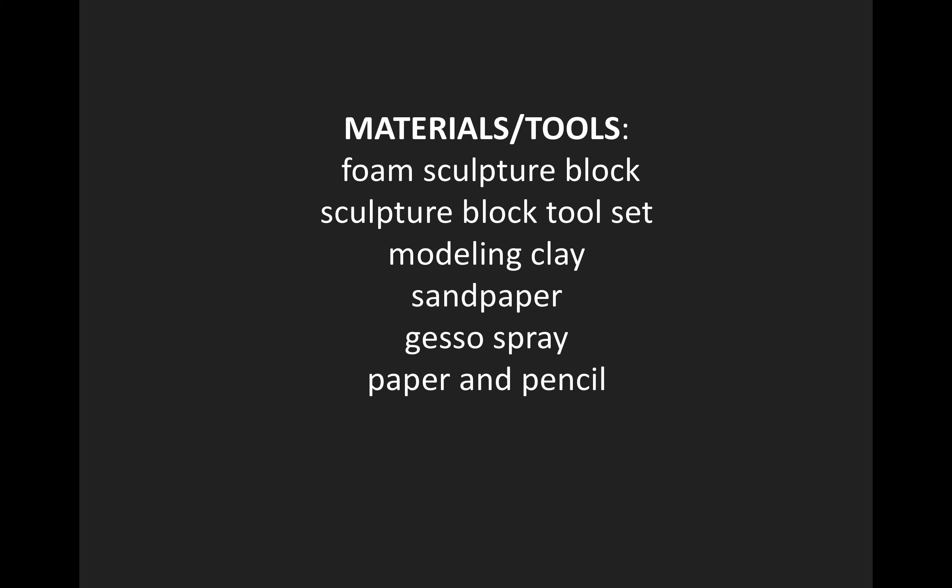Some materials and tools from your tool kit you'll want to get out is the foam sculpture block — a 6x6x6 inch block — the sculpture block tool set, modeling clay, sandpaper, gesso spray, and paper and pencil. Just like with the prior project, if you decide that you need additional tools, feel free to use them. You might decide that you need a nail file, a steak knife, or a drill bit. You can scavenge or buy whatever tools you need to convey your idea.